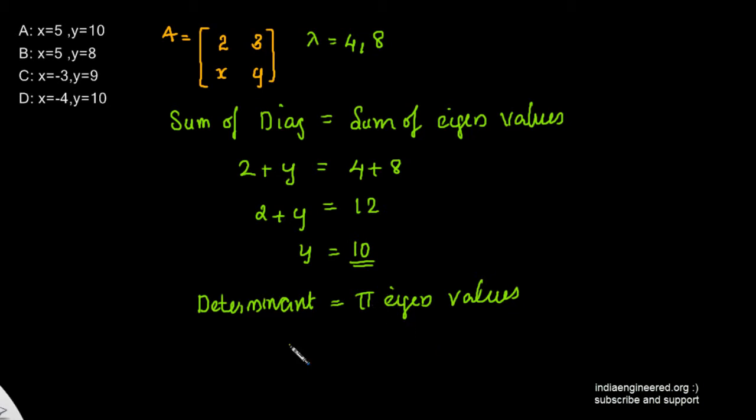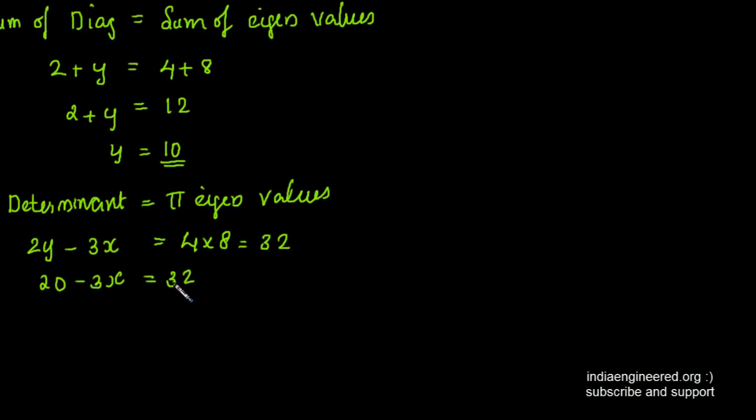By using this property, you can see what is the product of eigenvalues, that is 4 into 8, which is 32. And what is the determinant here? 2y minus 3x. We have already found out what is y, that is 10. So 20 minus 3x equal to 32, or 3x equal to minus 12, or x equal to minus 4.